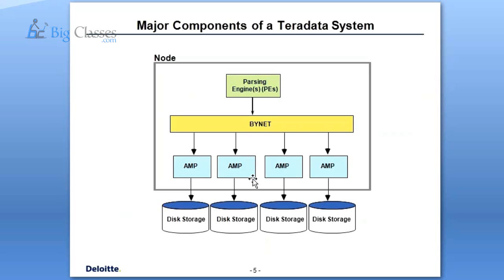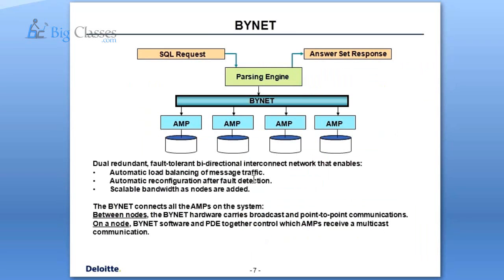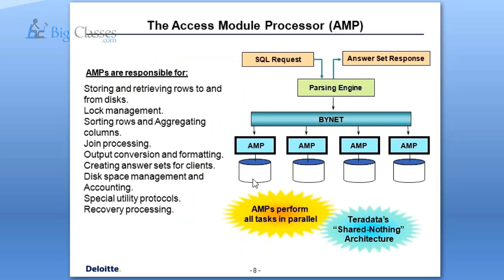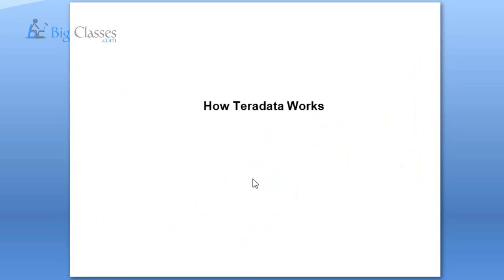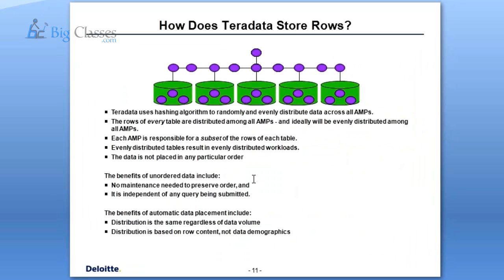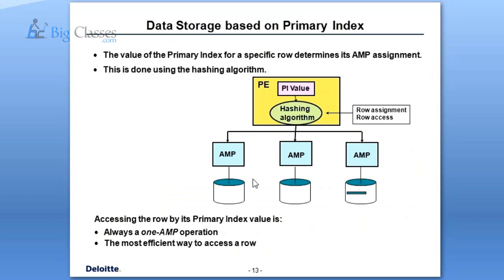Otherwise, if it is a non-unique primary index, the data will not be distributed as uniformly. Looking at the example with 9 rows across 4 AMPs with a unique primary index, the data will be distributed evenly — one AMP will get an extra record because of the odd number of rows. Once you create a table and define a unique primary index, the distribution of the data will be even and uniform. In the case of a non-unique primary index, the data is still distributed but there is a chance of the AMP getting skewed.